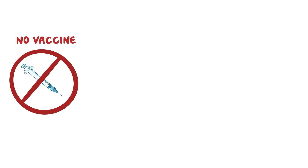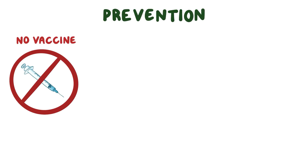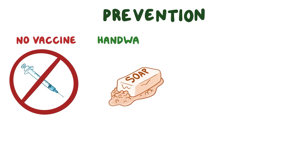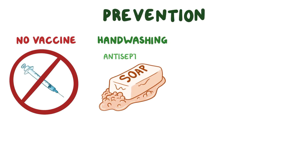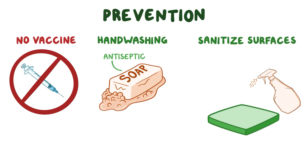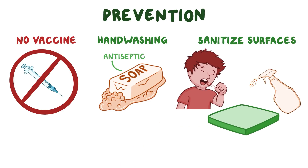Finally, there is no vaccine for parvovirus B19. Preventative measures include proper hand washing with antiseptic soap and water and sanitizing surfaces that would have come into contact with respiratory droplets, since the virus can survive on surfaces.